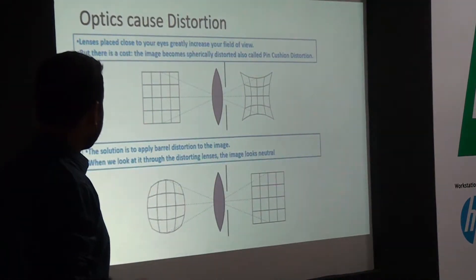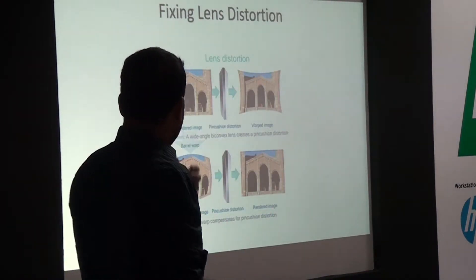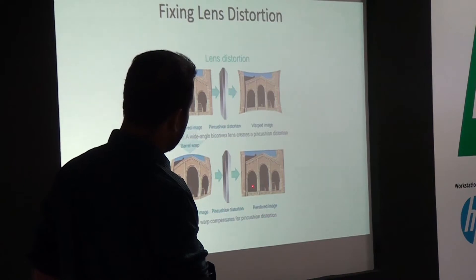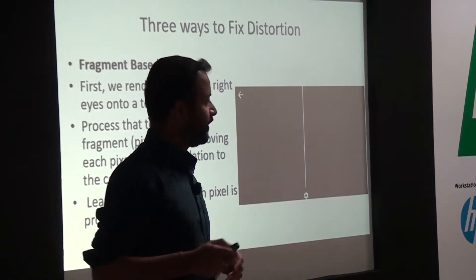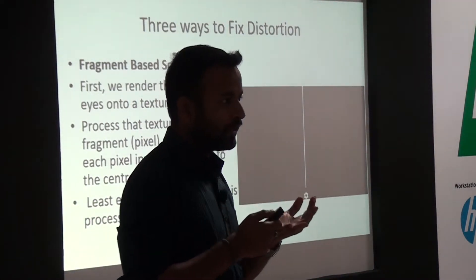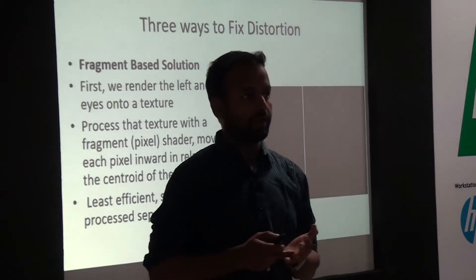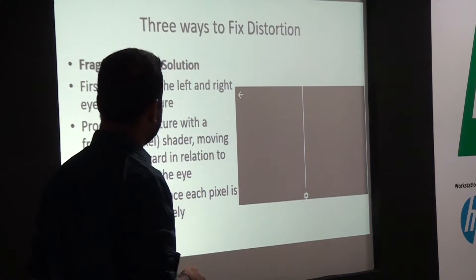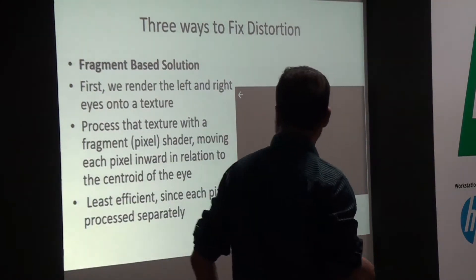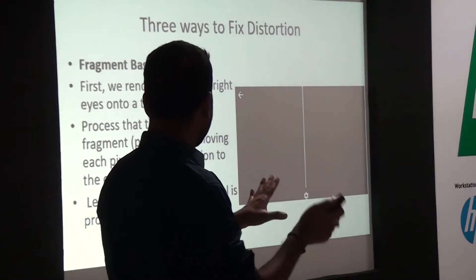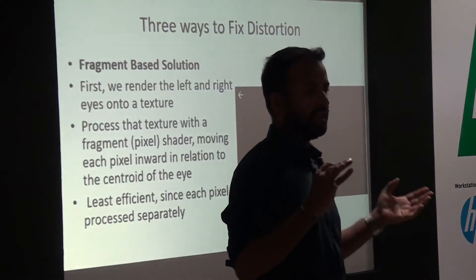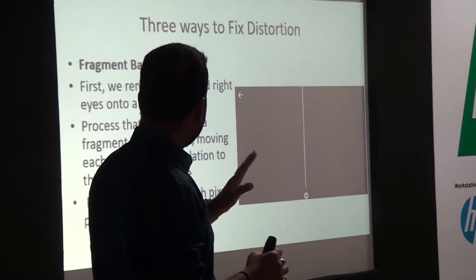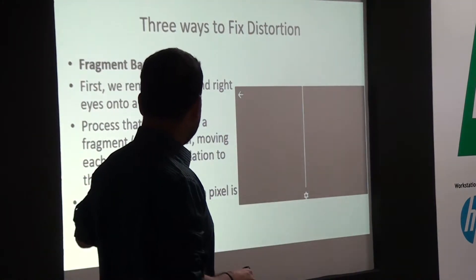That's how we remove distortion from optics. There are three ways to fix distortion — Google Cardboard does it differently from the Oculus SDK, which does it differently from the SteamVR SDK. The most basic form renders the left and right eye images onto a texture. The approach uses a fragment or pixel shader — Microsoft calls it pixel shader, macOS calls it pixel shader, and OpenGL on Linux calls it fragment shader — to process and correct distortion.